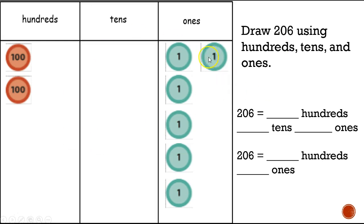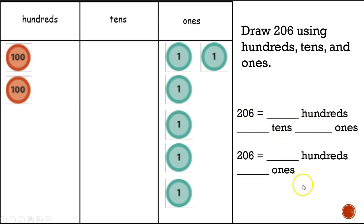I finished my place value chart. Now I need to figure out how many hundreds, how many tens, and how many ones to fill in the blanks. Two hundred and six equals two hundreds, zero tens, and six ones.